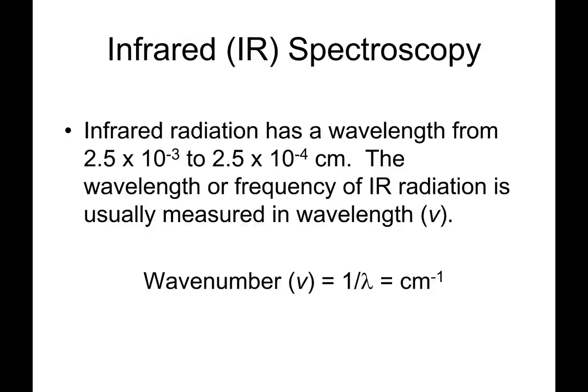We don't do everything in centimeters—we do everything in reciprocal centimeters. So we take 1 over the wavelength and call that the wave number. The reason for that is simplicity: we can have a scale that goes from 400 to 4,000, and then we just remember those numbers of where peaks show up.